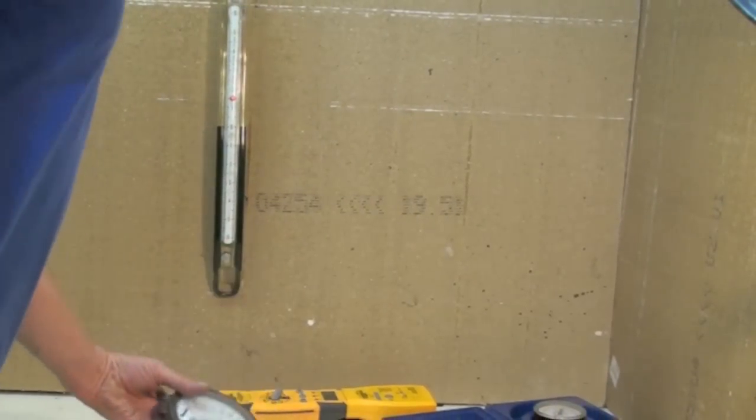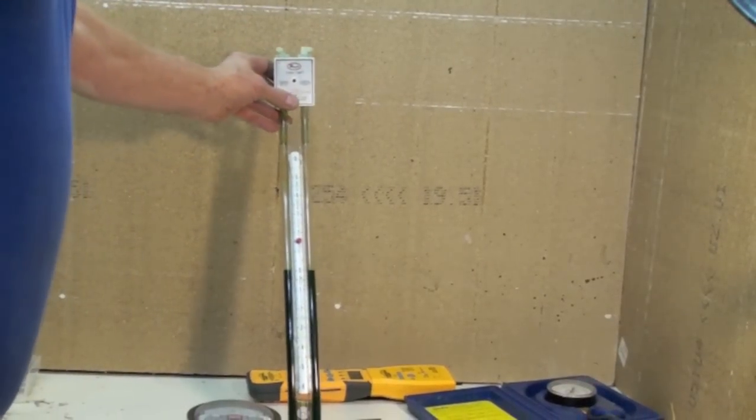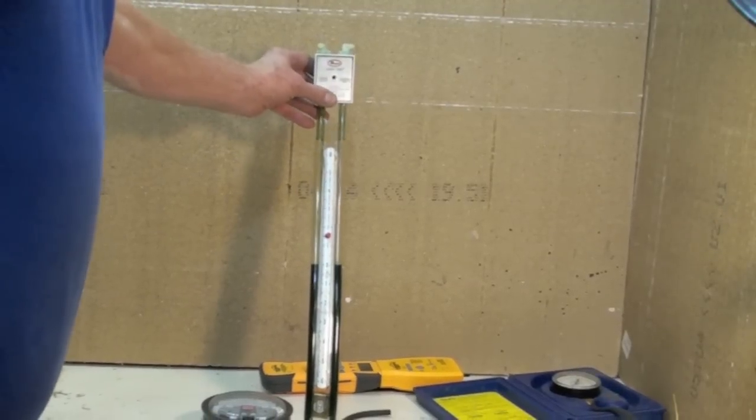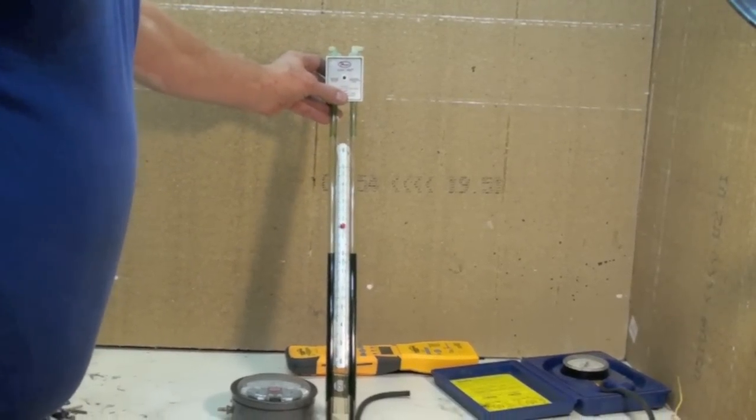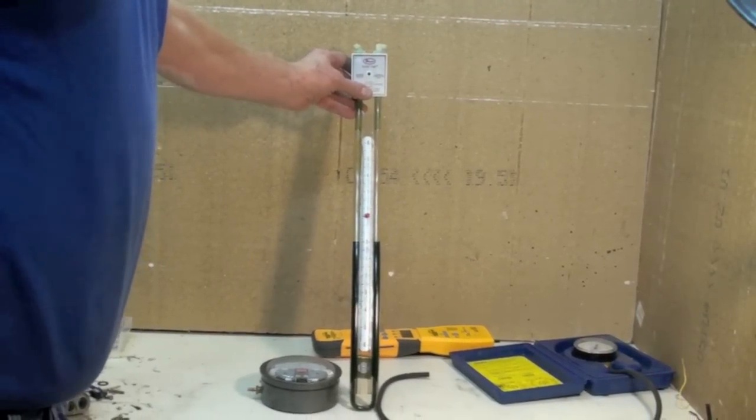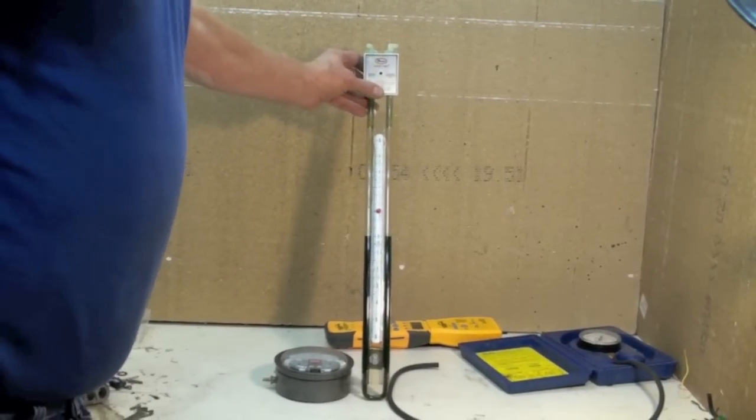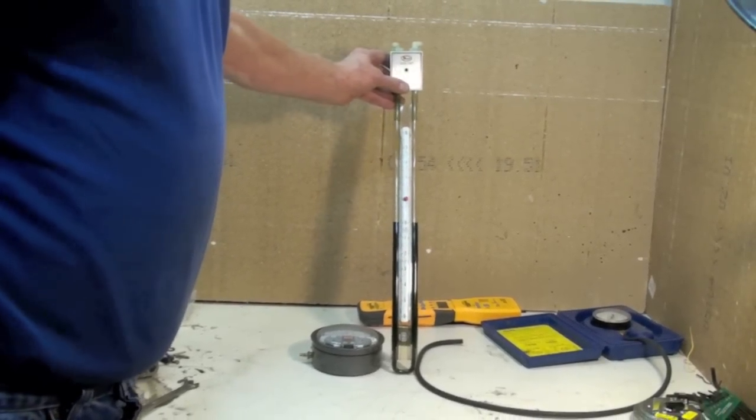I'm not real interested in the slack tube manometer because of the problems with using it such as freezing and getting all the measurements just right before you can start. Potentially this one could be the most accurate. I kind of doubt it but it does read directly in inches of water column.